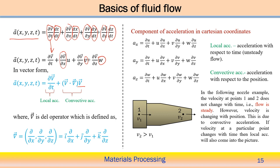The first term represents the local acceleration and the second term represents the convective acceleration. The total acceleration is the local acceleration plus the convective acceleration. The del operator is defined in vector form as del by del x, del by del y, del by del z with unit vectors i, j, and k along the x, y, and z directions.